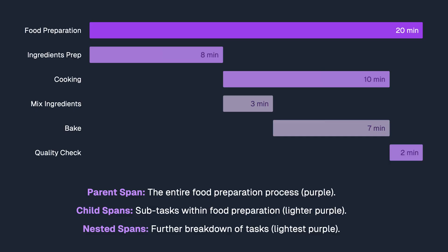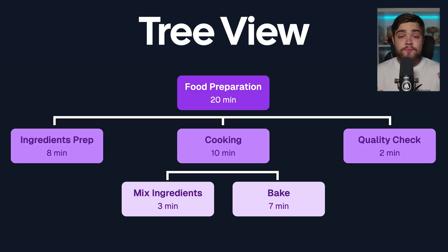Just like how a delivery driver can't start until the chef finishes cooking, spans often have that same parent-child relationship. Every span knows its parent, how long it took, and if errors occurred thanks to context. Together, these spans create a complete picture of what happened during your trace — like a family tree where the spans are the family members connected to their parents, all part of the same tree: the trace.